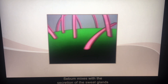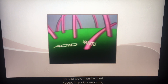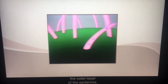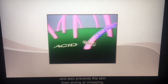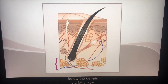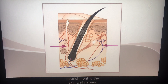Sebum mixes with the secretion of the sweat glands to produce a layer of oil and moisture called the acid mantle. The acid mantle keeps the skin smooth, prevents dirt and grime from entering the outer layer of the epidermis, and also prevents the skin from drying or chapping. Below the dermis is a fatty layer called the subcutaneous tissue, which forms a protective cushion for the skin and contains large blood vessels that transport nourishment to the skin and nerves.